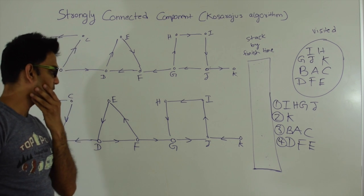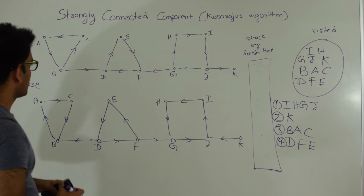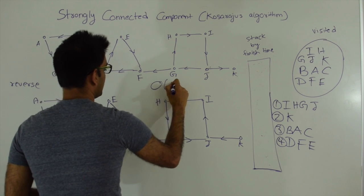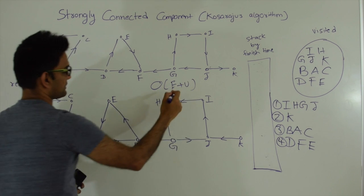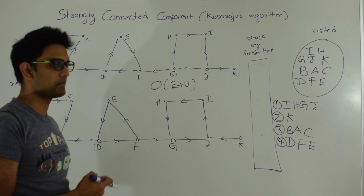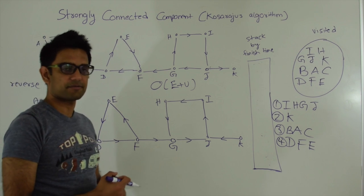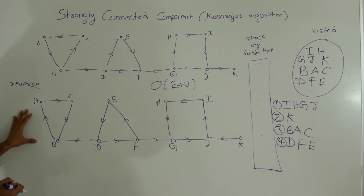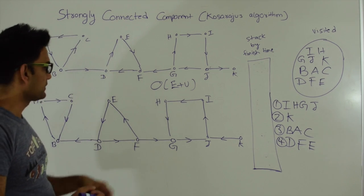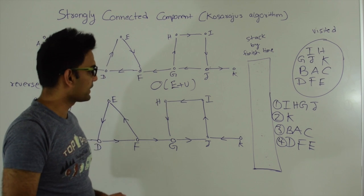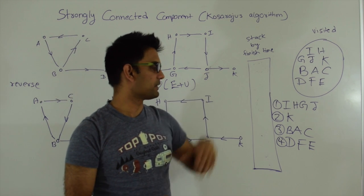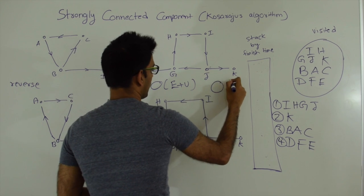Let's analyze the time and space complexity. In the first pass we did a DFS, which takes O(E + V) time, where E is the number of edges and V is the total number of vertices. Then we reversed the graph, and then we did another pass on the reversed graph, taking another O(E + V) time. So the total time complexity is O(E + V). The space complexity is straightforward — the stack and the visited set each hold at most V elements, so the space complexity is O(V).